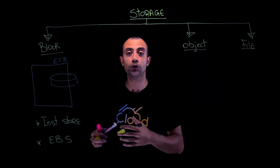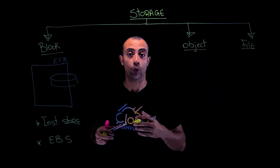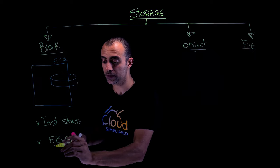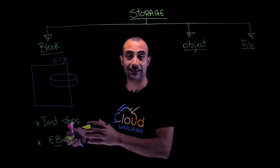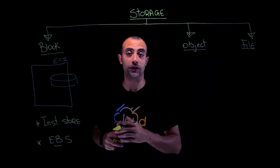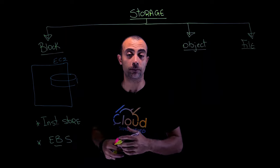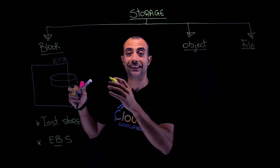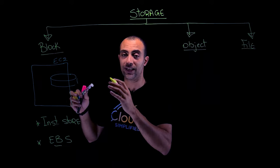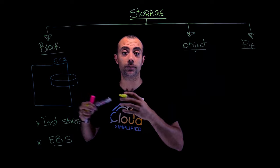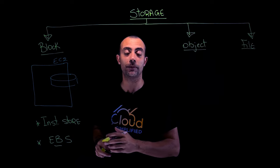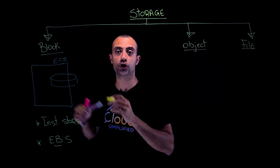But where do you store your operating system, or data that you'd like to persist? That's where EBS, or Elastic Block Store, comes in. EBS is like the hard disk attached to your EC2 instance — this is where you can store your operating system because the data inside EBS is persistent. If you stop or reload your EC2 instance, the data remains.